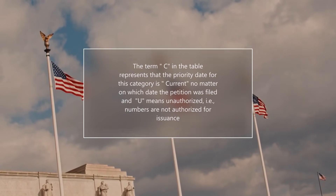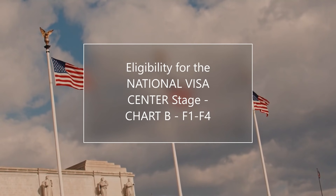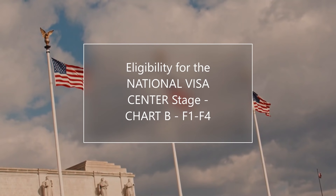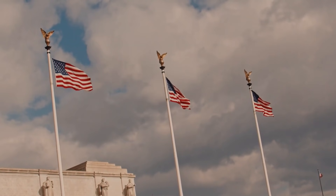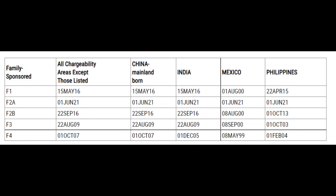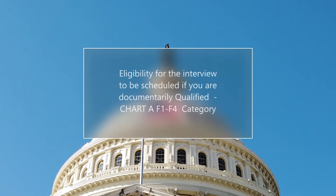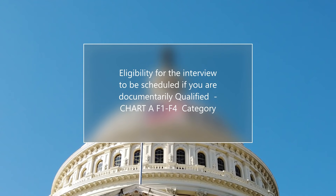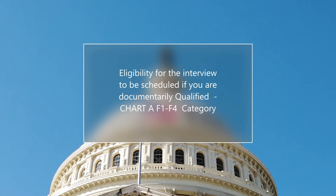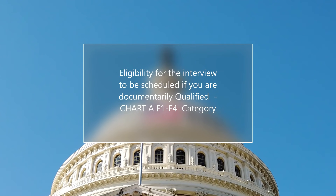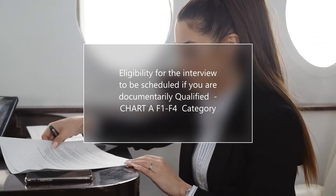We have arranged the visa bulletin in chronological order. First, we discuss eligibility for proceeding with the National Visa Center stage — Chart B — for F1 to F4 visa categories. The priority dates for these categories are as follows. Next, we discuss eligibility for the interview to be scheduled if you are documentarily qualified — that is, Chart A final action dates for family visa categories. These are as follows.